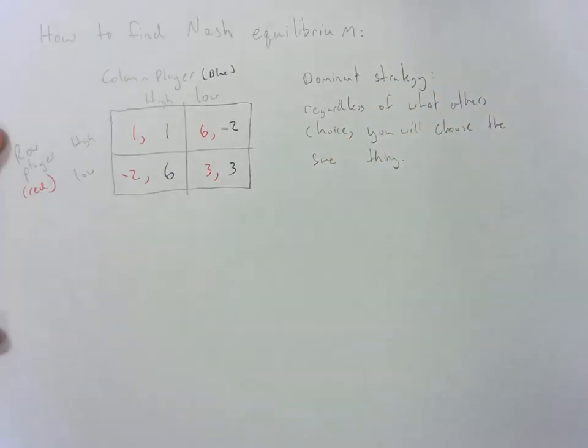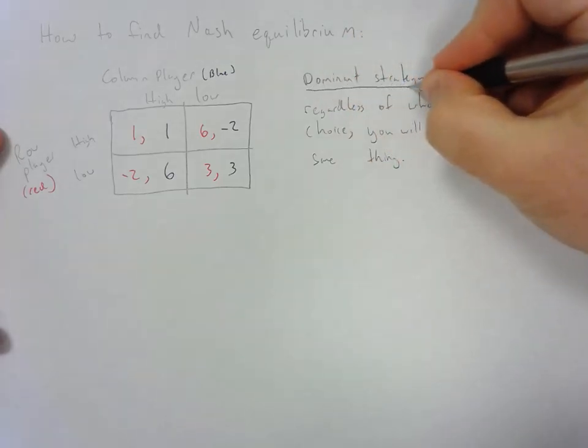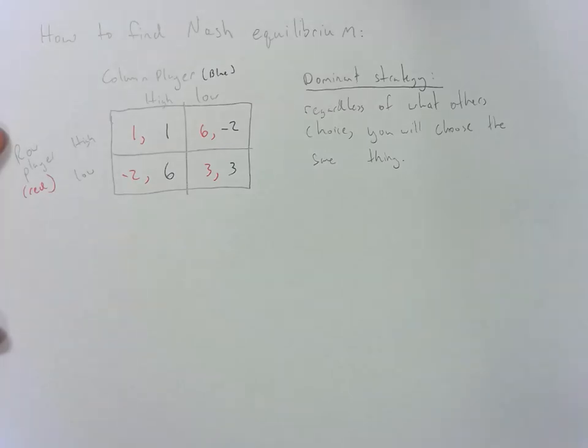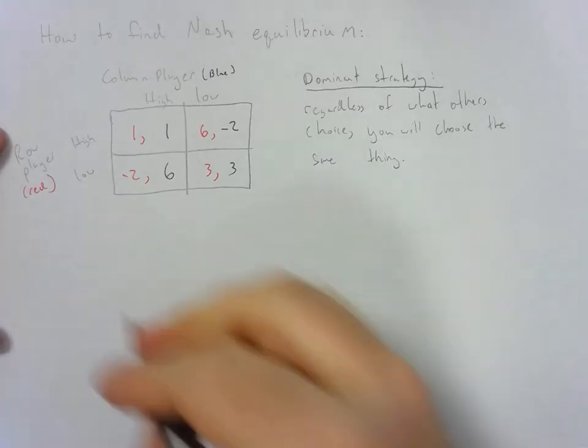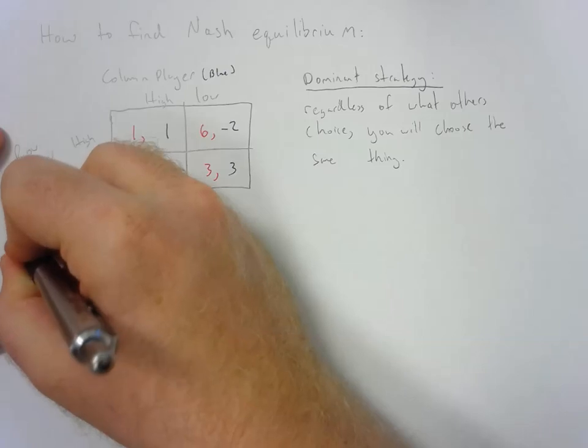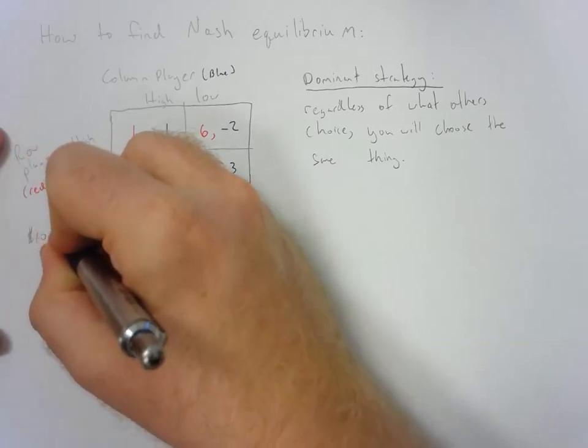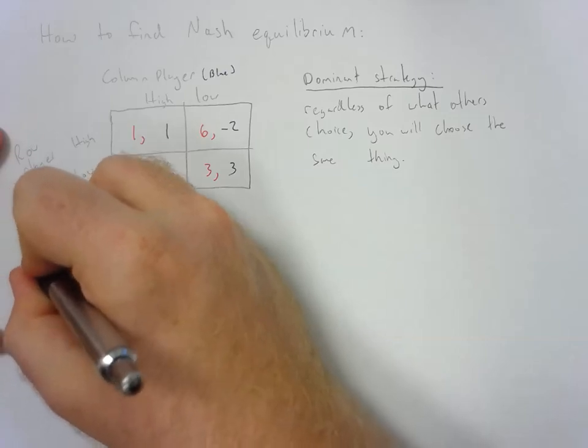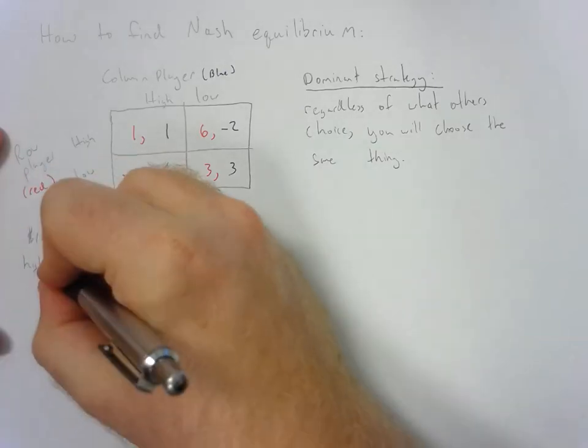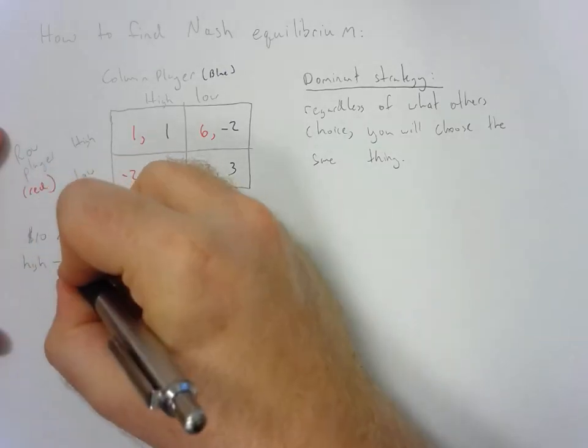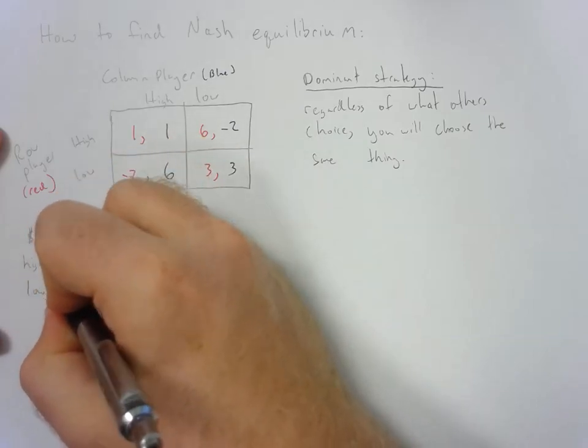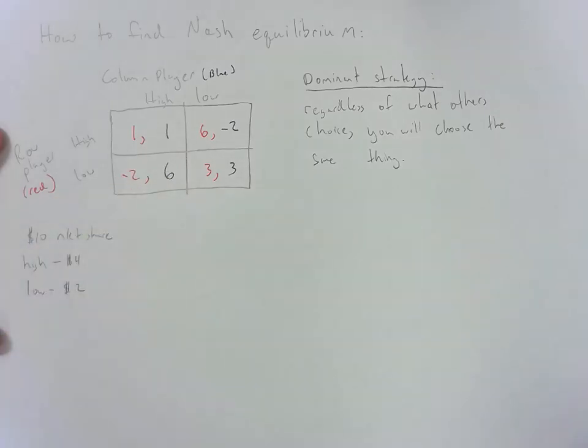So you may be asking, okay, that's great. Dominant strategy, we'll figure that out. But first, where did these values come from? In case you're curious, what I'm going to assume here is that we have a $10 market share, and then they have high or low advertising amounts they can choose to do. So if they choose to advertise the high amount, it costs $4. If they choose to advertise the low amount, it costs $2.